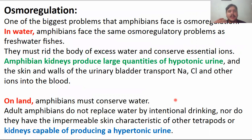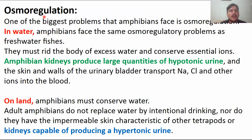The second topic is osmoregulation — the maintenance of salt and water concentration in the body of a living organism regardless of changes in the external environment. There are challenges for amphibians because land and water are different environments. When in water, amphibians are like freshwater fishes.